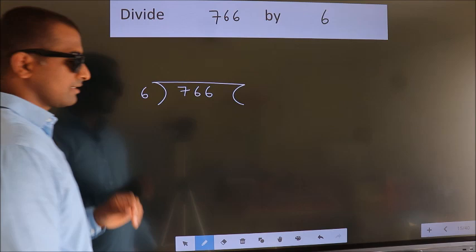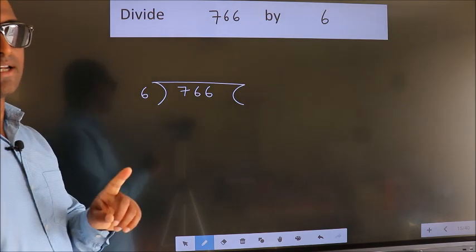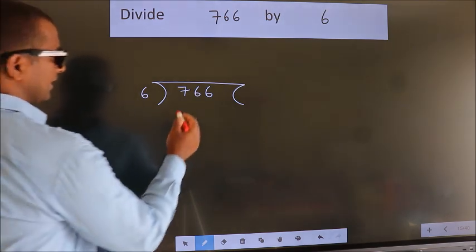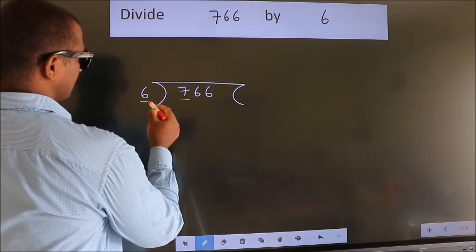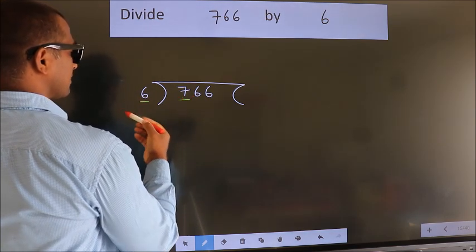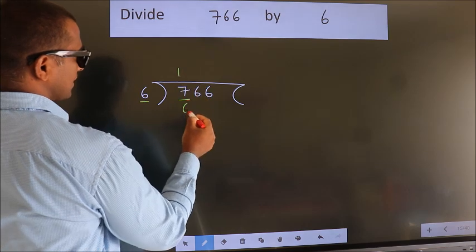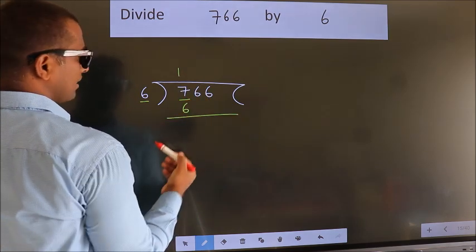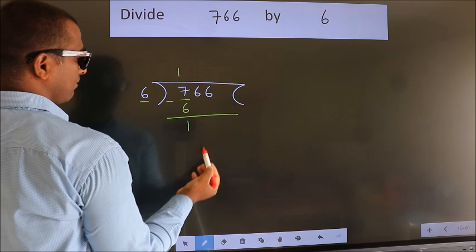This is your step 1. Next, here we have 7, here 6. A number close to 7 in 6 table is 6 ones, 6. Now we should subtract. We get 1.